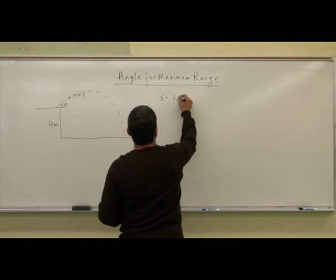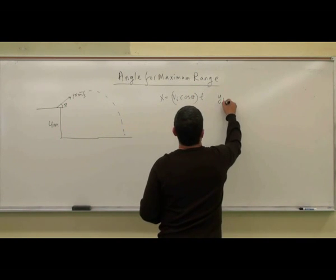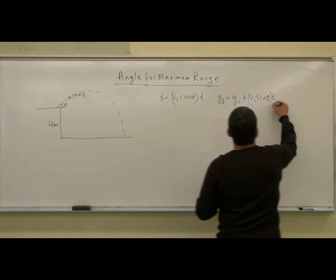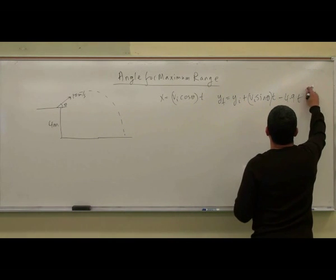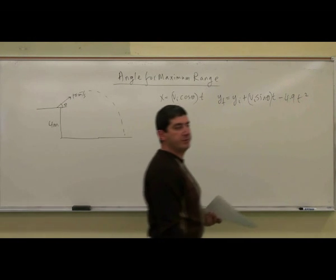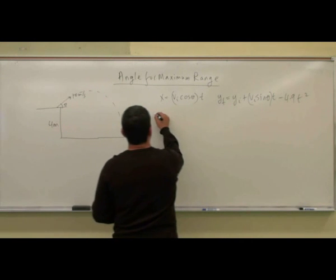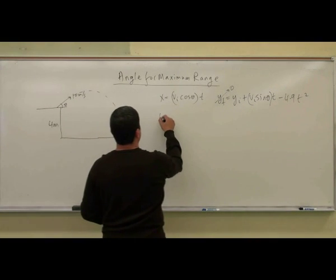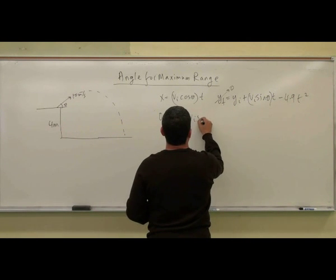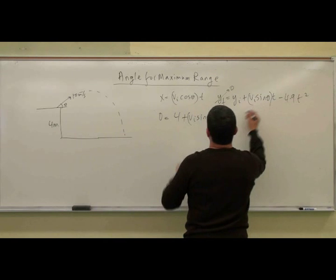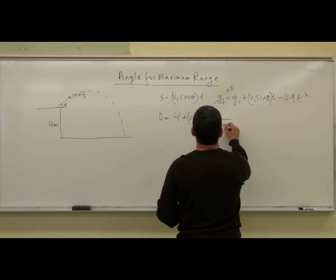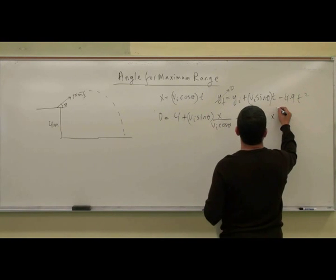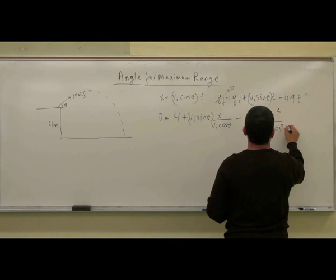The equations of projectile motion are: x equals v-initial cosine(theta) times t, and y-final equals y-initial plus v-initial sine(theta) times t minus 4.9t squared — using the metric unit system with g = 9.8. Taking t from the x equation and substituting it into the y equation, with y-final equal to 0 and y-initial equal to 4 meters, we get: 4 = v-initial sine(theta) times (x / v-initial cosine(theta)) minus 4.9 times x squared over (v-initial squared cosine squared theta).